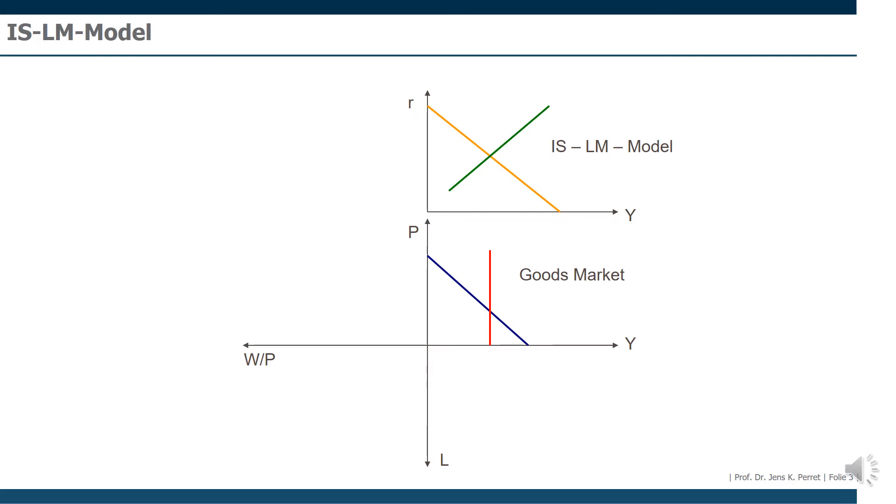So if we transfer the overall equilibrium here in the IS-LM model to the goods market, this will signify automatically that here demand and supply also have to meet.